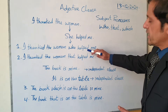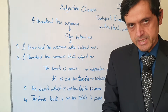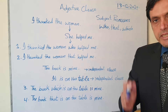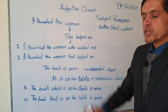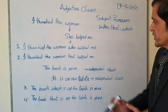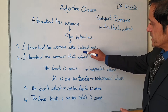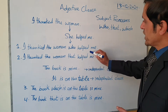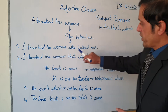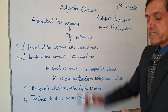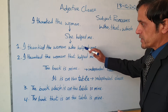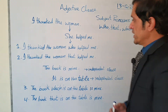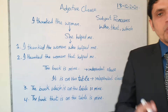But 'I thanked the woman' is an independent clause, which is a complete sentence. And 'who helped me' is a dependent clause, which is not a complete sentence. This dependent clause always needs a main clause to explain its complete meaning. That's why we say it is a dependent clause — depend means it depends on another clause.